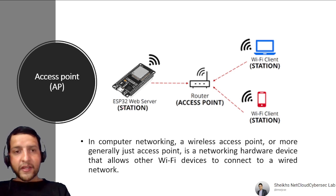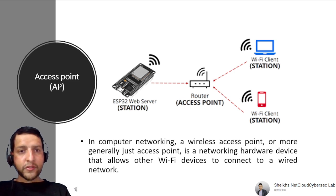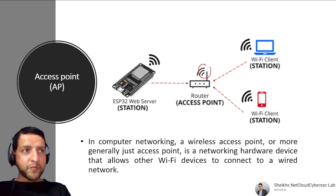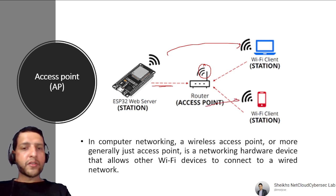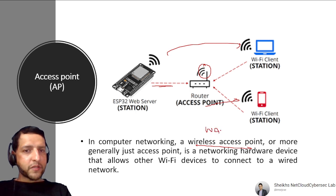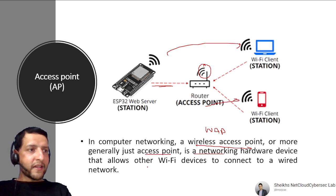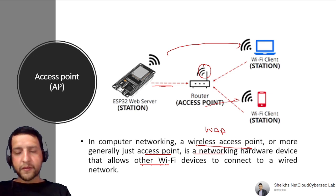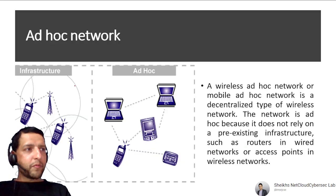An Access Point connects wireless devices to a wired network. It could be a hardware device or a soft access point on your phone. In computer networking, a wireless access point (WAP) is a networking hardware device that allows Wi-Fi devices to connect to a wired network. Note that an ad hoc network has no access point — devices connect directly, such as via Bluetooth, in a decentralized peer-to-peer manner.